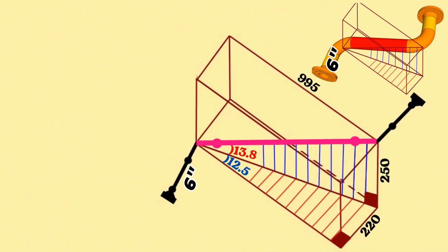The hypotenuse of the vertically blue right angle triangle is the distance between the elbow centers in the pipeline. Let's mark the hypotenuse of this vertical blue right angle triangle with the letter H. Now let's begin to find H using the trigonometric function formula to calculate the hypotenuse of this right angle triangle.